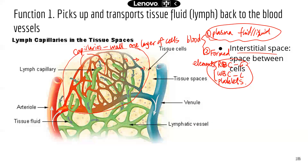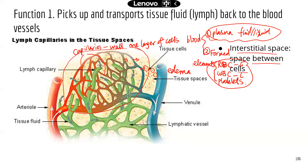The fluid comes out of the capillaries and accumulates in the interstitial space — the space between cells. If you have too much of that fluid, you get edema, which is basically swelling of the tissues. So you need a mechanism to remove the excess fluid and return it back to the blood. That's the job of the lymphatic system — it picks up the excessive fluid and returns it to the blood.